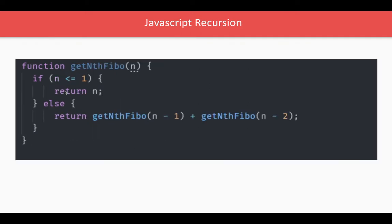For the Fibonacci number, if n is less than one — if n is zero it returns zero, if n is one it returns one. Fibonacci of one is one and Fibonacci of zero is zero. Until this base condition is matched, the function keeps calling itself by passing different arguments like n minus one and n minus two.